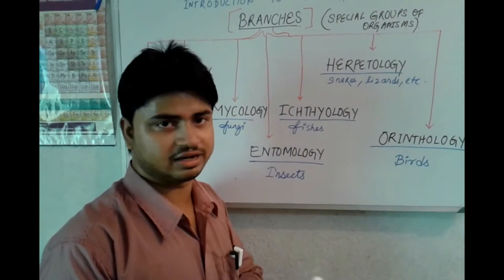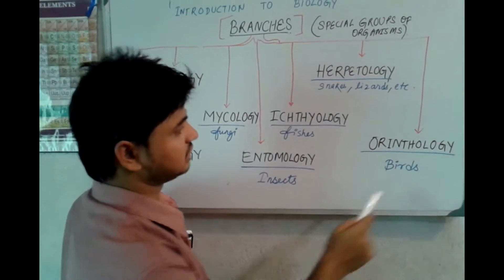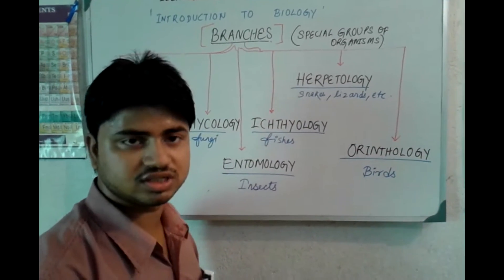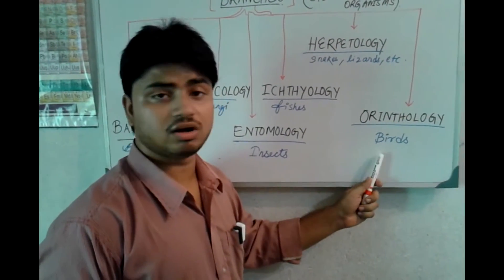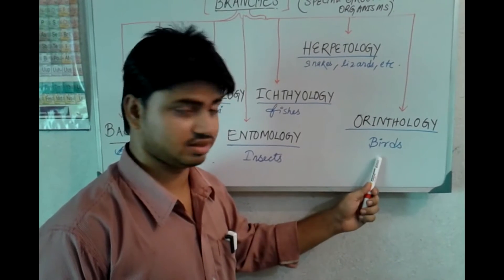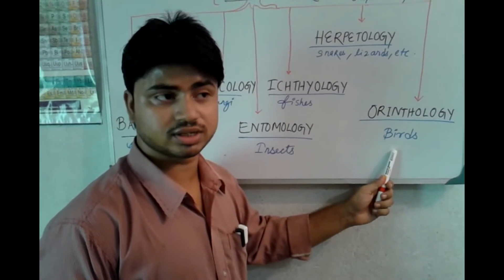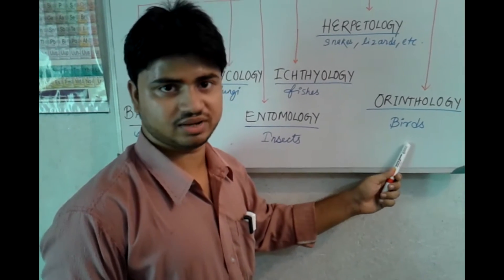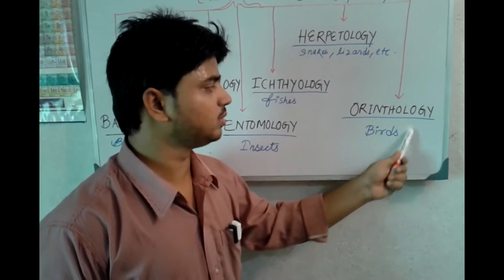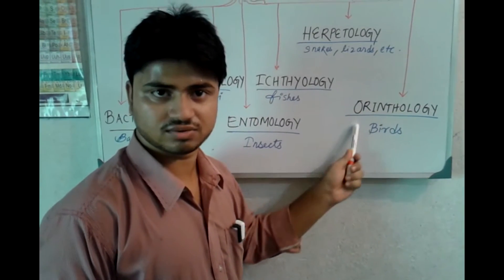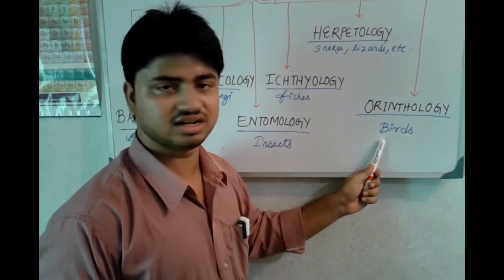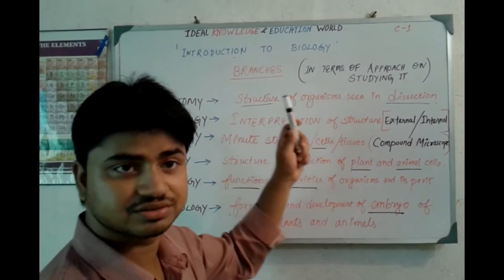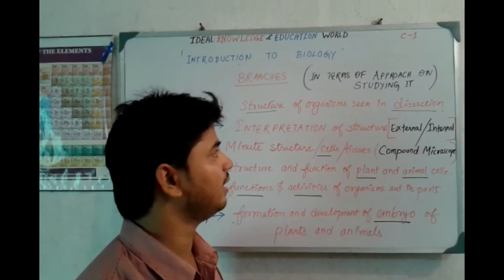The next and last branch in special groups is ornithology — the study of birds. Topics such as the evolution of birds, divergent evolution, convergent evolution, and the theory of evolution can all be found under the study of birds. This study is called ornithology.